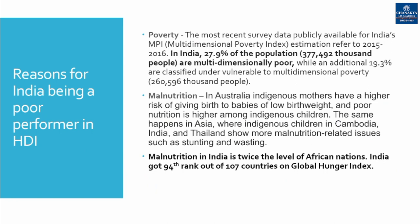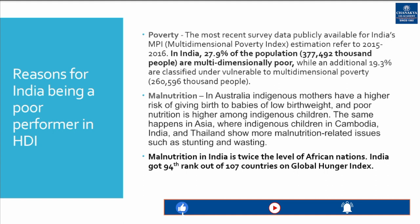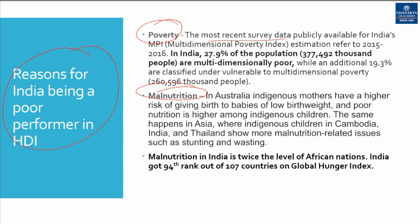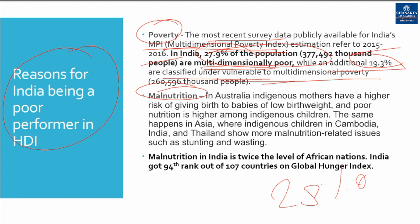What are the reasons for India being a poor performer in the Human Development Index? The most prominent ones are poverty and malnutrition. The most recent survey available for MPI — Multi-Dimensional Poverty Index — of base year 2015-16 says that nearly 28% of the population are multi-dimensionally poor, while an additional nearly 20% are classified as vulnerable to multi-dimensional poverty.